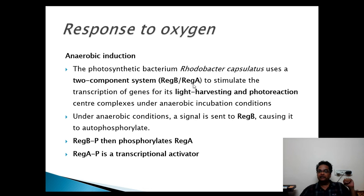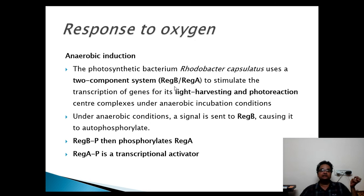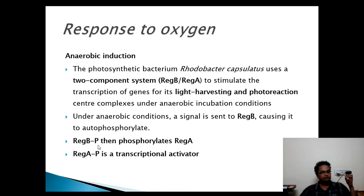The RegB-RegA system stimulates the transcription of genes for light harvesting and photoreaction center complexes under anaerobic incubation conditions. Under anaerobic conditions, a signal is sent to RegB. RegB acts as a histidine kinase, so when RegB receives the signal that conditions are anaerobic, it undergoes autophosphorylation, resulting in phosphorylated RegB.